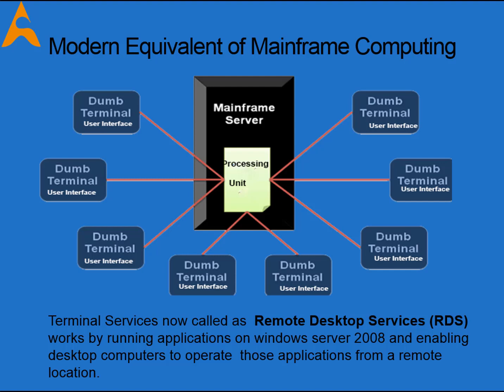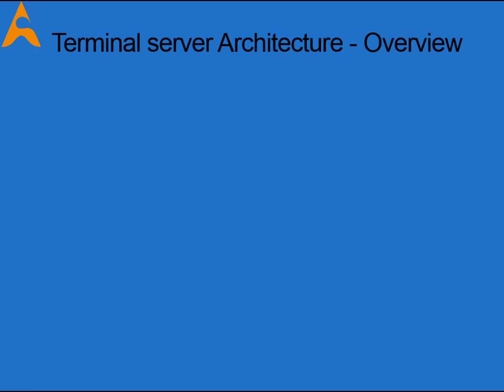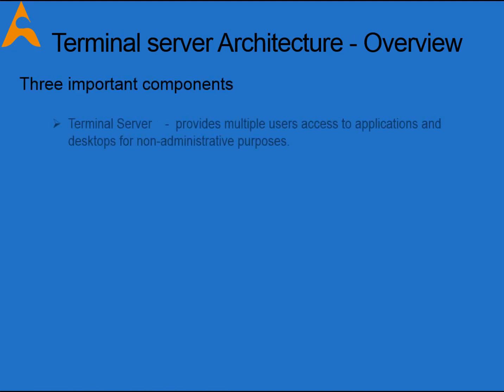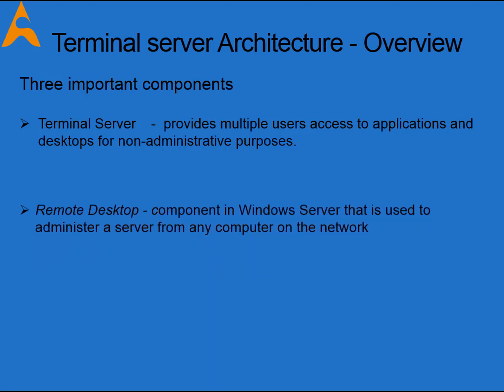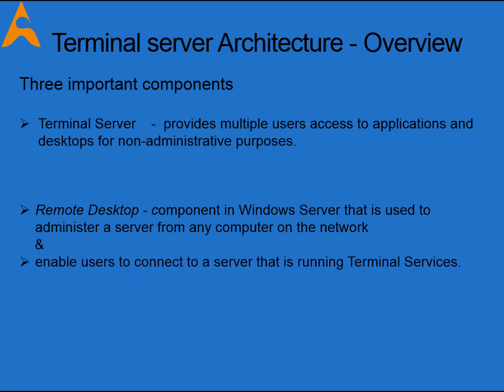All the applications and RAM are installed on the server, and thin client users can access them. All processing for thin clients happens at the terminal server. If a thin client goes away, the user can go to another thin client and continue work. RDS has three important components: the terminal server, which provides multiple users access to applications and desktops for non-administrative purposes; Remote Desktop Connection (RDC), used to administer a server from any computer on the network and enable users to connect to a terminal services server.